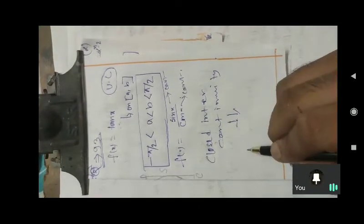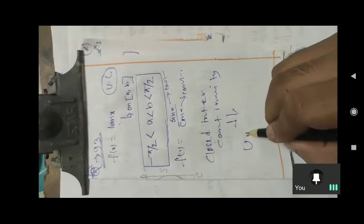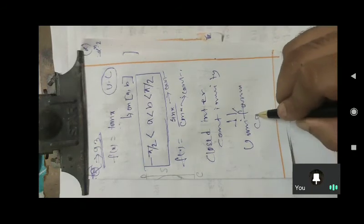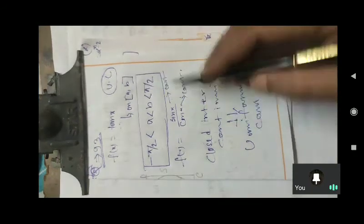This means uniform continuity. Closed interval continuity implies uniform continuity.